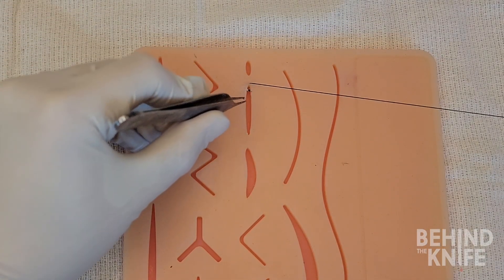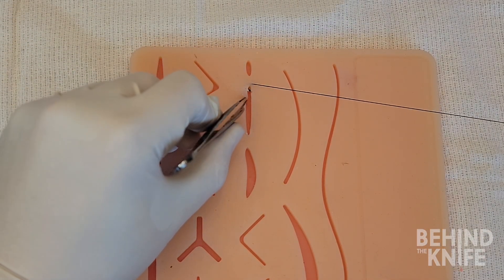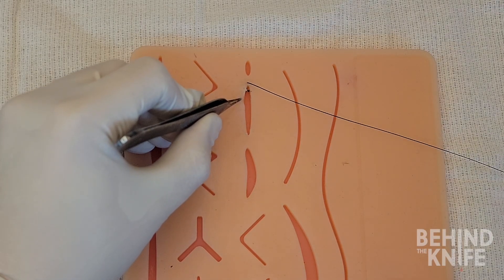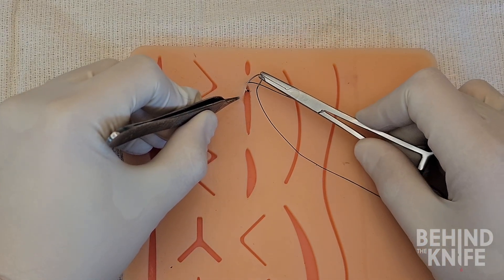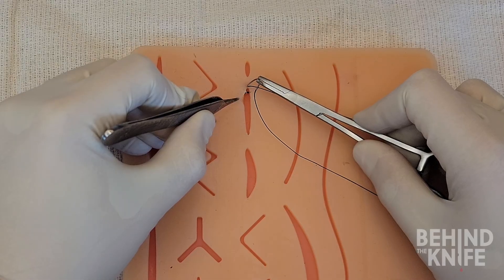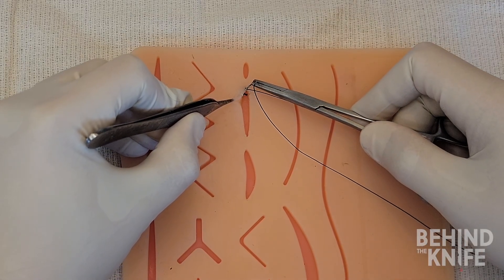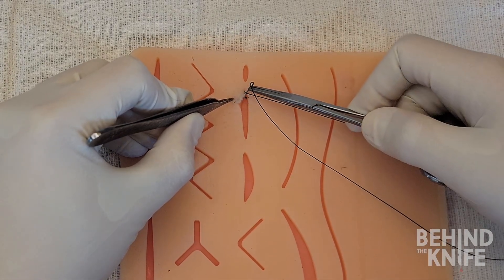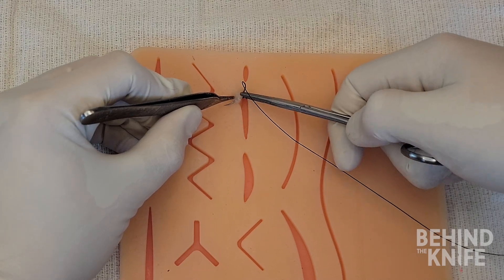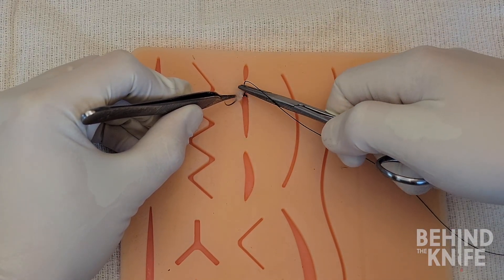We can now start the running portion of the suture by taking alternating bites of the left and right side of the wound. To do this, I will use the teeth of my forceps in my left hand to grasp the very edge of the epidermis and pull the skin edge up while everting it to make passing the needle through the dermal-epidermal layer easier.